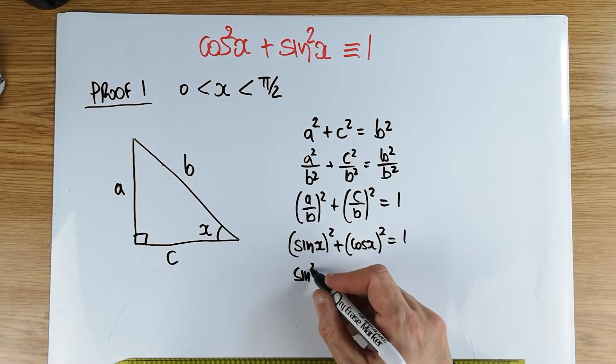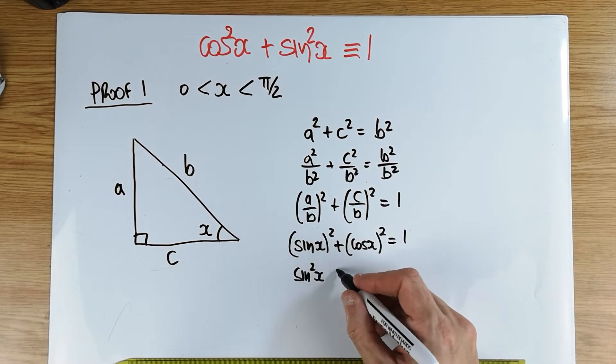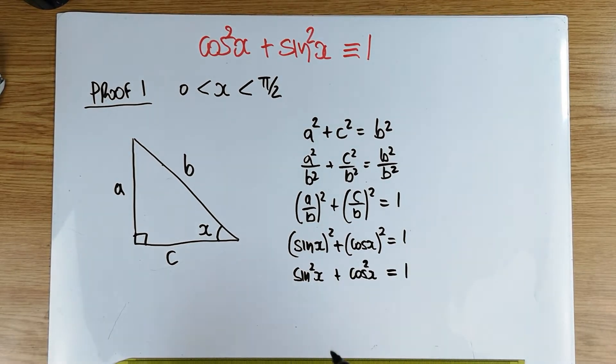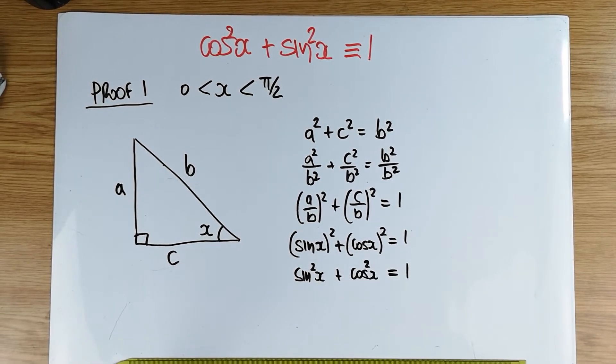And therefore, we've just actually proven that sine squared of x plus cos squared of x is always equal to 1, so long as your x is an acute angle.